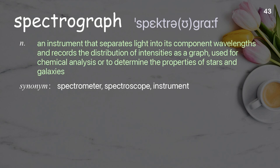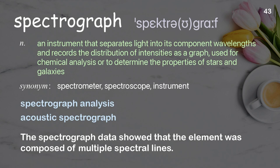Spectrograph: An instrument that separates light into its component wavelengths and records the distribution of intensities as a graph, used for chemical analysis or to determine the properties of stars and galaxies. Examples: Spectrograph analysis, Acoustic spectrograph. The spectrograph data showed that the element was composed of multiple spectral lines.